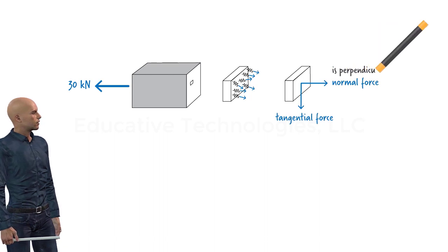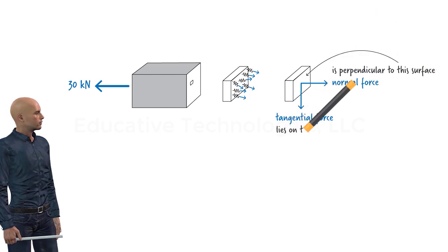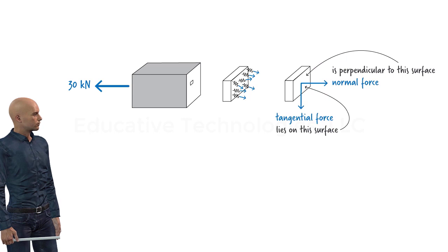The normal force is perpendicular to the cross sectional surface and the tangential force lies within the plane of the surface.